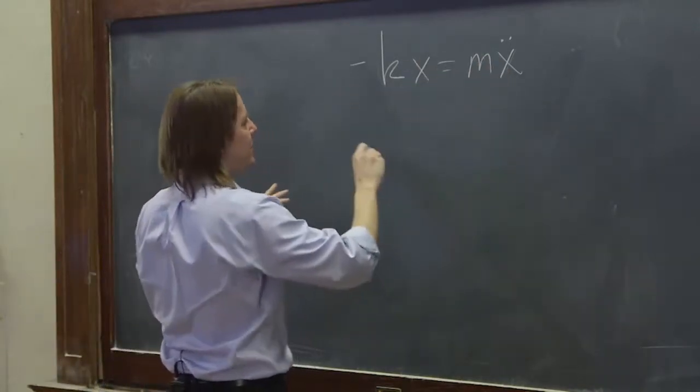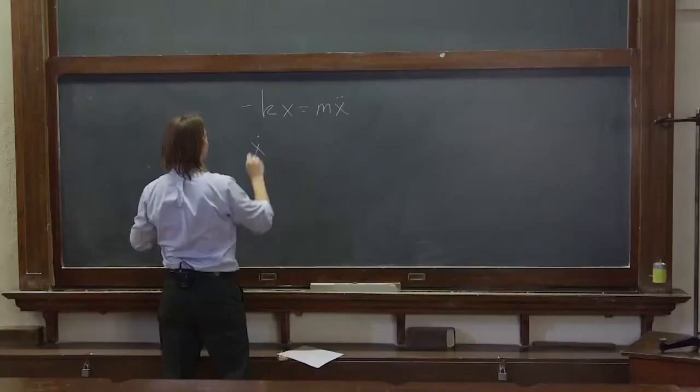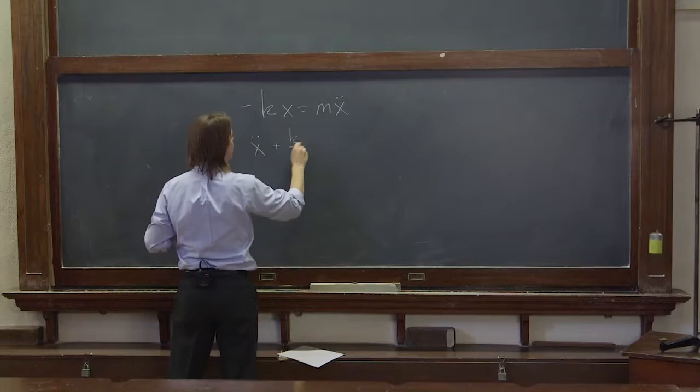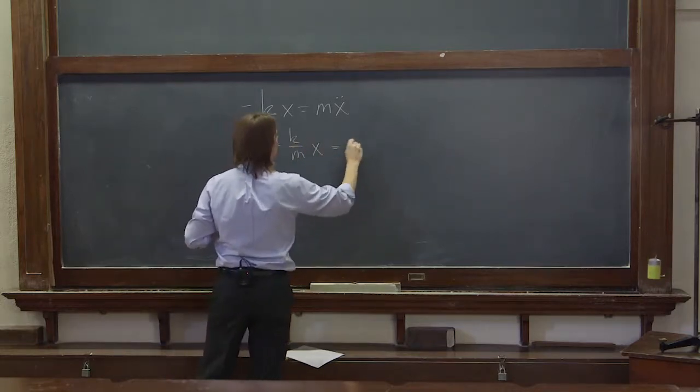Now, the more normal way to write this is to solve for the highest order derivative and write it sort of by itself. So we bring this over here and divide through by the m, and we get x double dot plus k over m x equals zero.